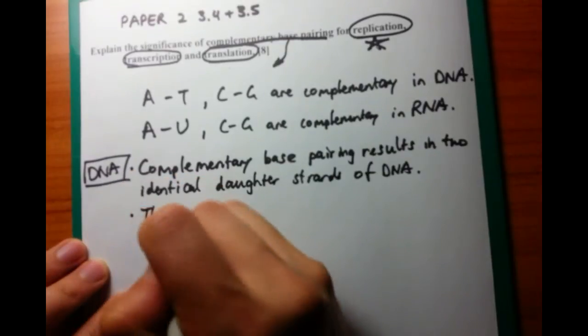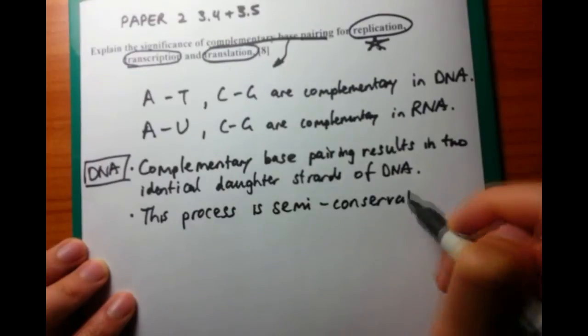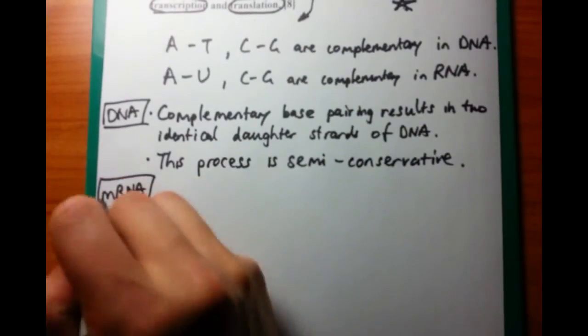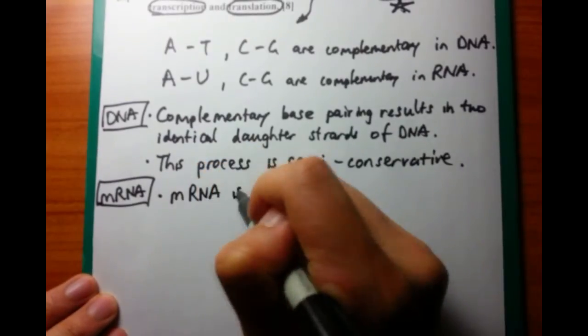And you can add in another line down here that the process is semi-conservative, that the mother strand of DNA is broken into half, and each daughter strand of DNA will have one strand which is from the mother and another newly synthesized strand.